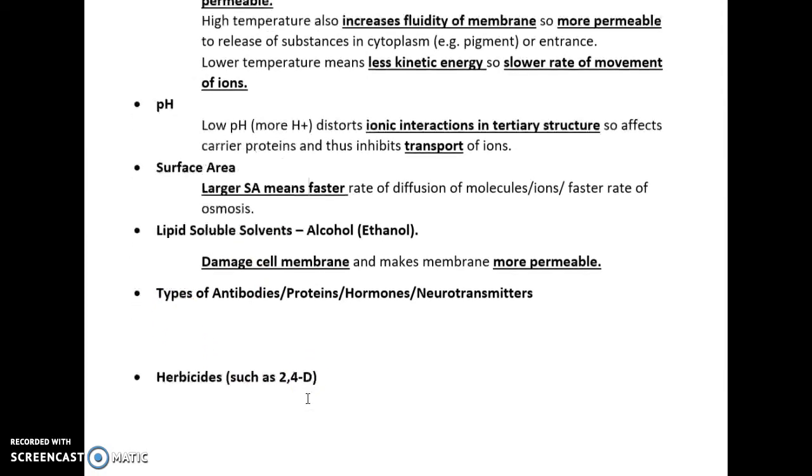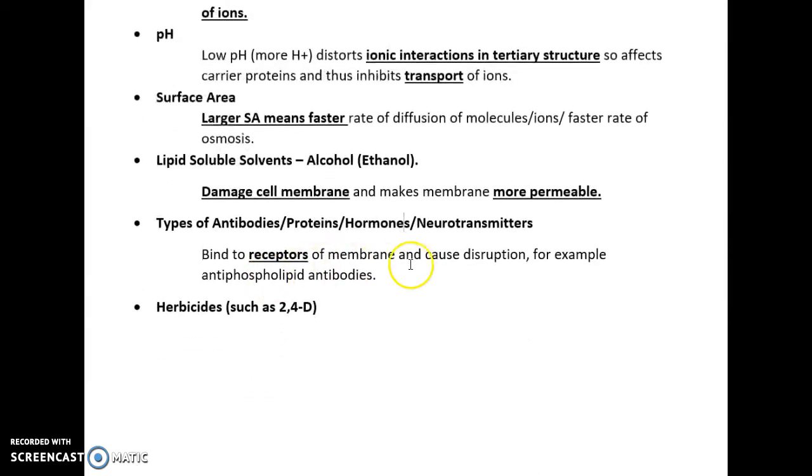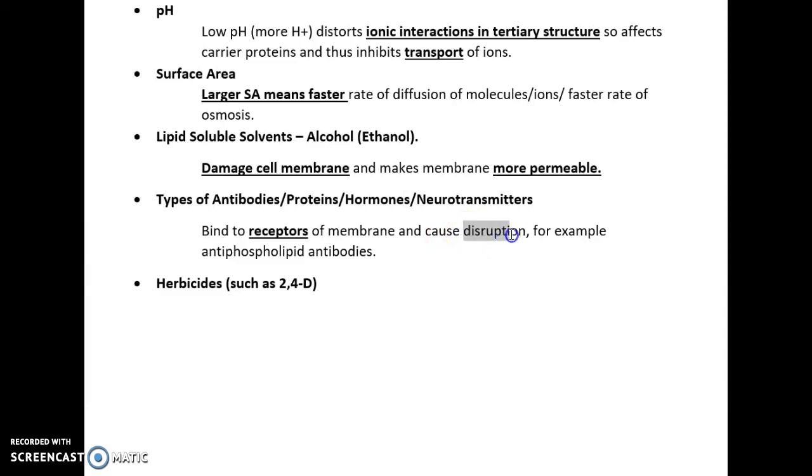Turning more into application territory, they could ask about variables such as antibodies, proteins, hormones, or neurotransmitters. Obviously, antibodies and proteins bind to receptors on the membrane and cause disruption. For example, antiphospholipid antibodies bind to receptors on the membrane, disrupting the cell and breaking down the phospholipid bilayer. They could use that context to show how the permeability of the membrane changes—it would become more permeable because it's been disrupted. Therefore it's more likely to be destroyed by the movement of water into the cell membrane.